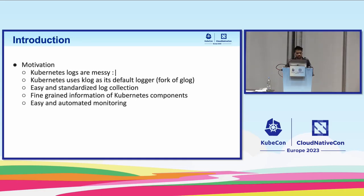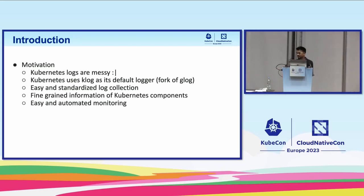The motivation behind this: when Mark started in 2020, Kubernetes logs were very messy — just strings that could guide you, requiring you to navigate through the codebase to understand what's happening. Kubernetes uses klog for logging, which is a fork of glog. We maintain our own fork in klog according to our needs. There is no easy and standardized log collection designed for Kubernetes. For example, in OpenTelemetry we have the OTLP log data model as a standardized way to collect metadata, but that's not the case with Kubernetes today.